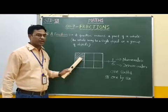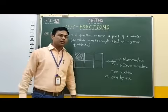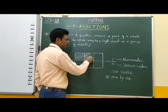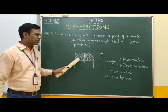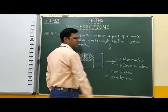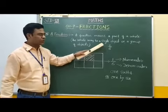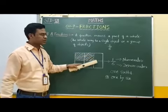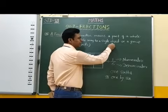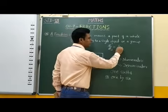Therefore the fraction of this shaded part is 1 by 6, or 1 sixth. Now if we shade 2 parts in this figure, then the fraction for these 2 parts is 2 by 6, because there are 2 shaded parts so numerator is 2, and total 6 equal parts so denominator is 6. Dividing both numbers by 2 gives us 1 by 3.